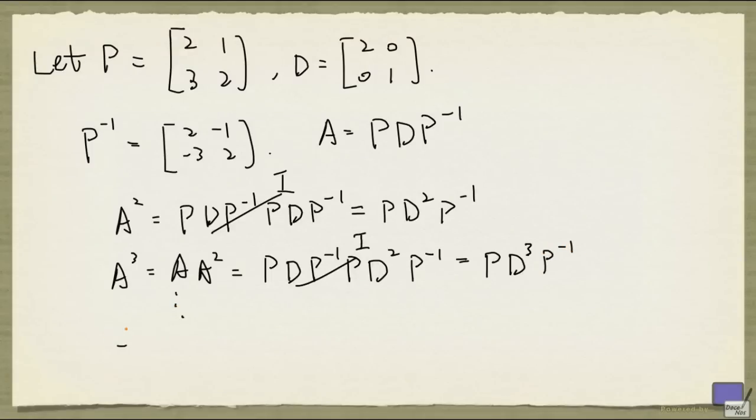And as you can see, if we continue in this fashion, we can deduce that A to the k is P times D to the k times P inverse.